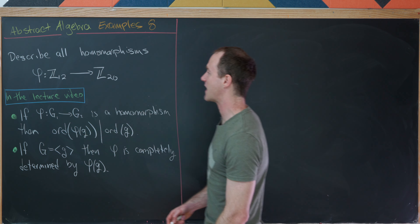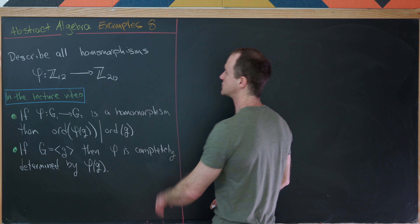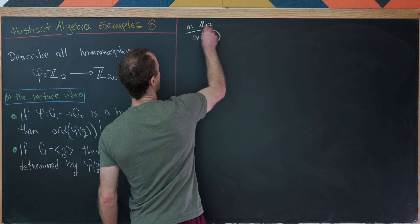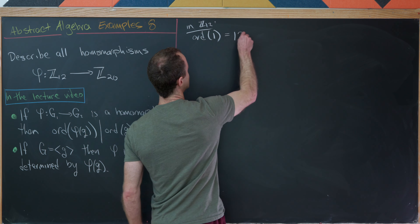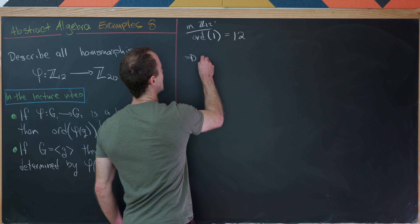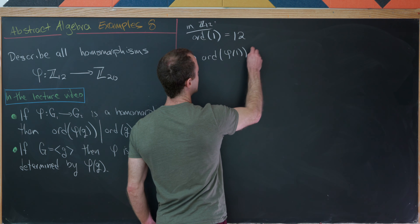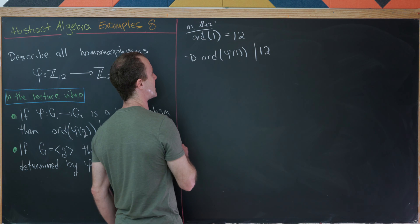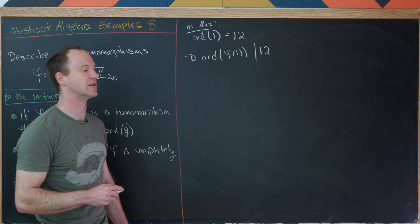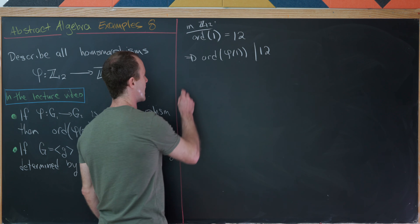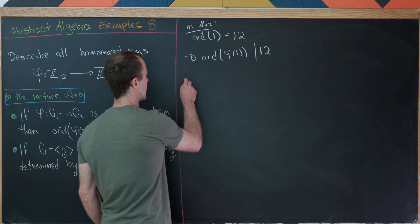Now let's apply that to our setup. Notice that the order of the number 1 inside of Z12 is equal to 12. That tells us that the order of φ(1) must divide 12, so that only gives us a couple of possibilities for the order of φ(1), given that there are only a few divisors of 12. So let's note the possibilities for the order of φ(1).